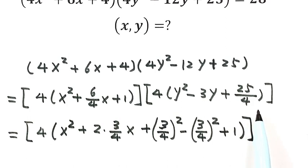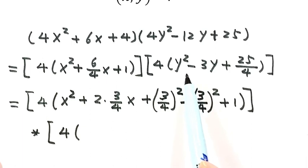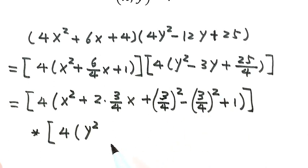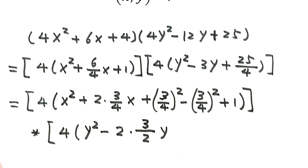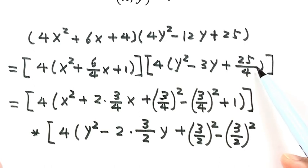Now let's see the second part. We also want to make a complete square inside the parentheses. We have y squared minus 3y, which we write as y minus 3/2 using the pattern 2 times (3/2). To complete the square we add (3/2) squared, then subtract (3/2) squared to keep balance, and we still have the plus 25 over 4.